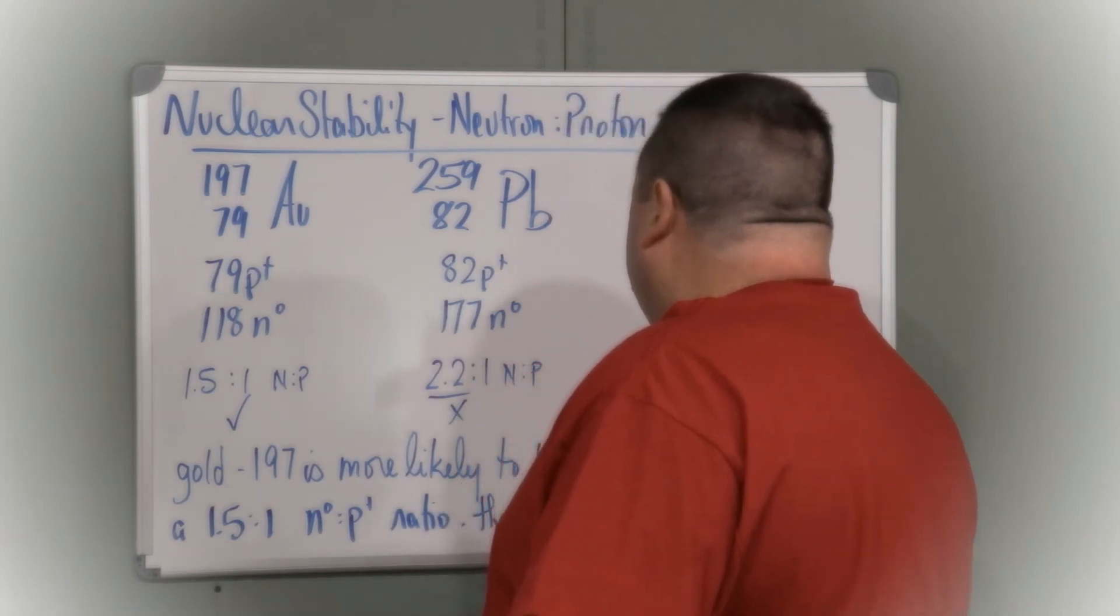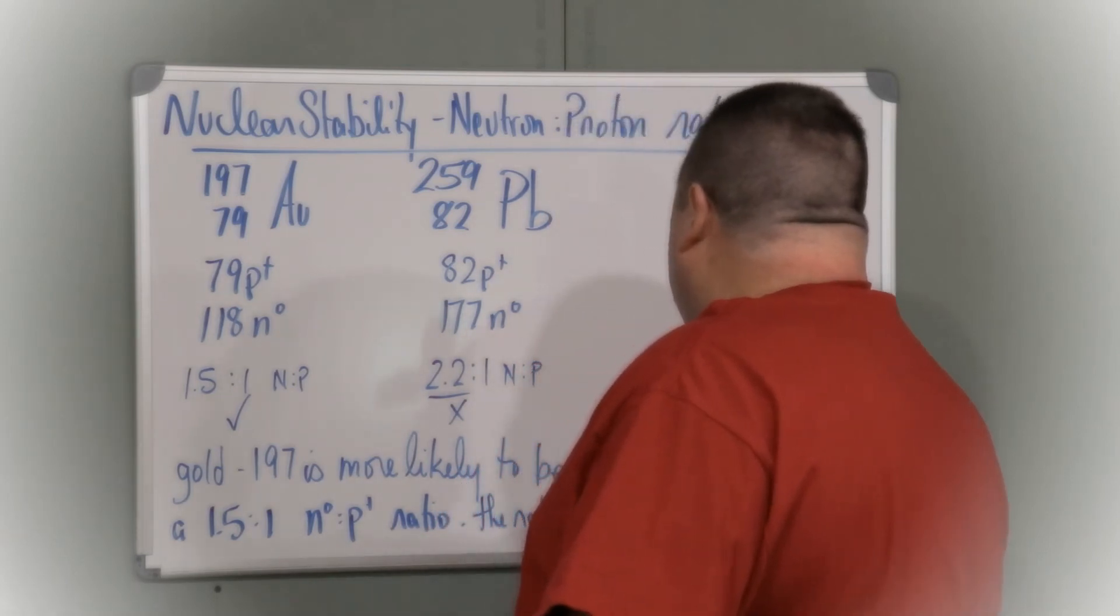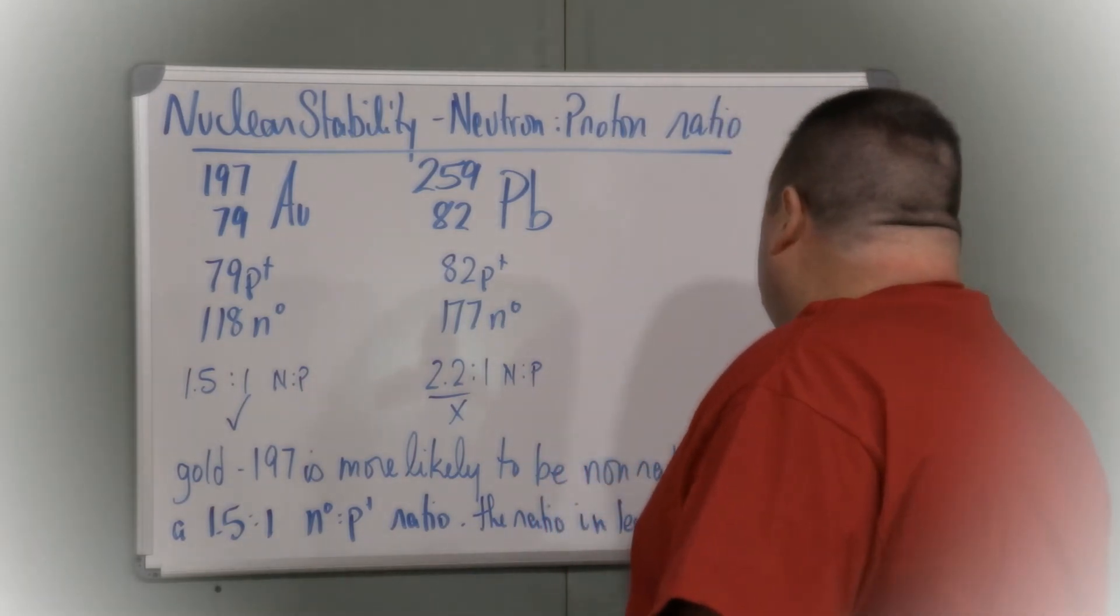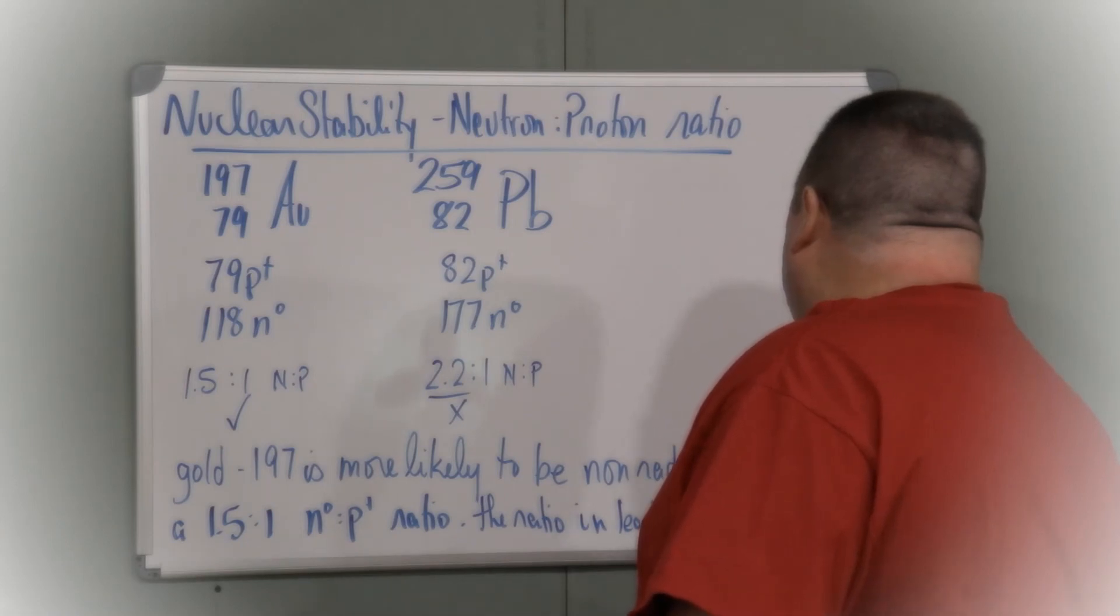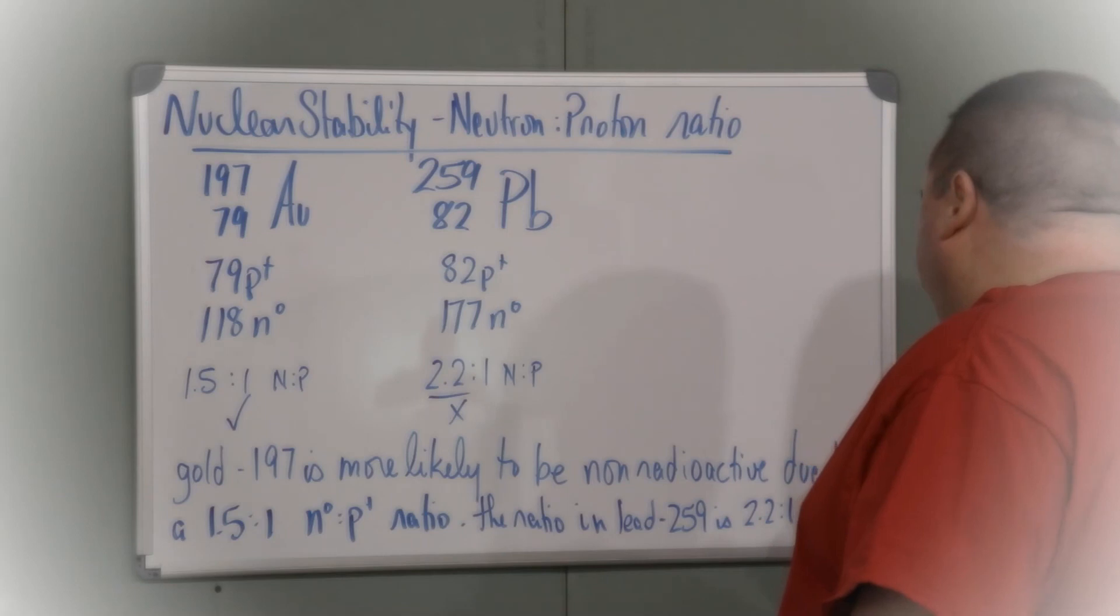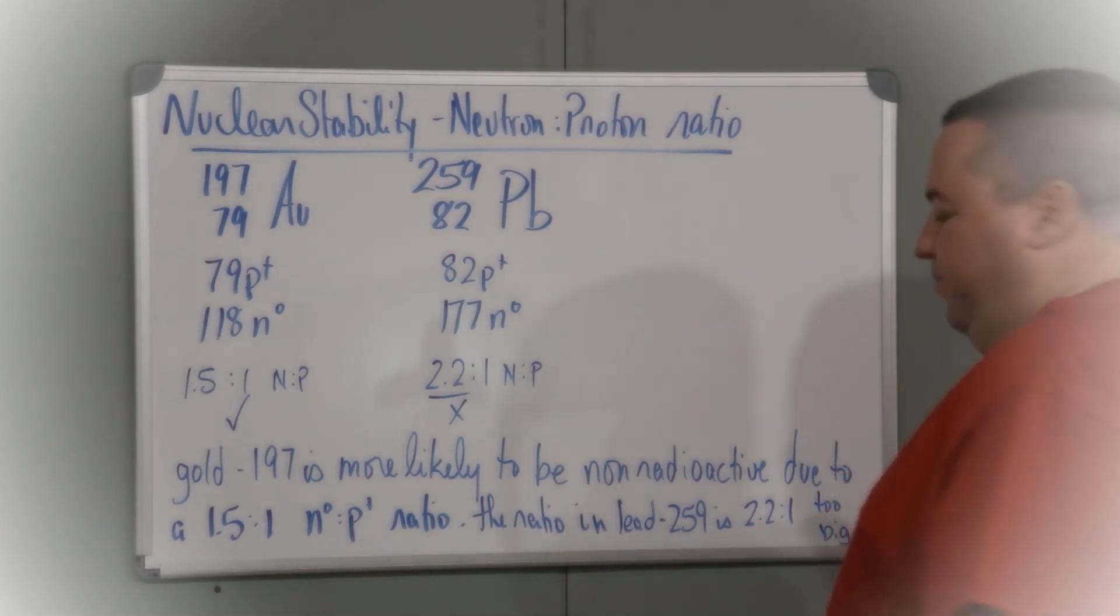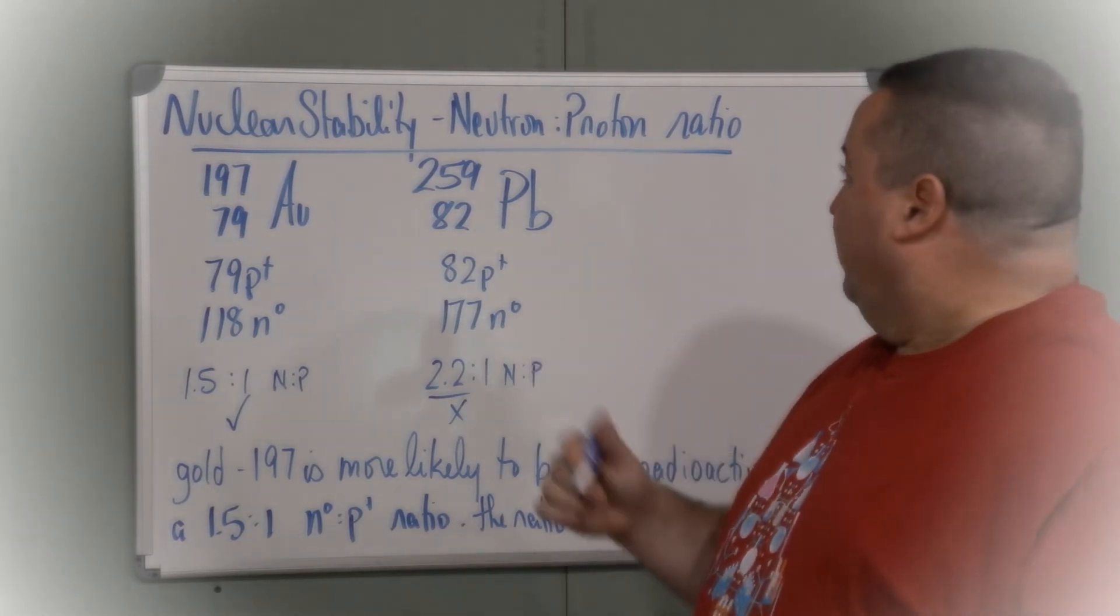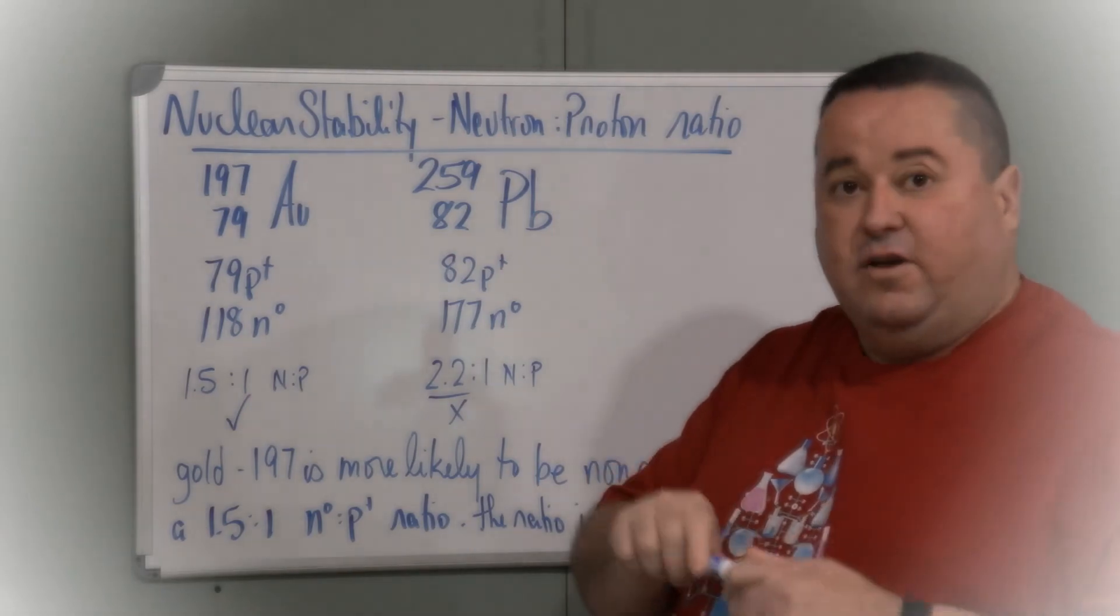The ratio in lead 259 is 2.2 to 1, too big. So this one is all about the neutron to proton ratio.